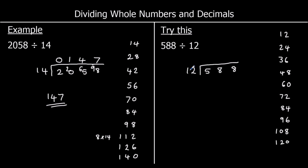How many 12s go into 5? None — carry the 5 over into the tens. How many 12s go into 58? 4 make 48, so 4 twelves go into 58 with 10 left over. The 10 goes into the ones making 108. How many 12s go into 108? That's 9 exactly — 9×12 is 108. So the answer is 49.